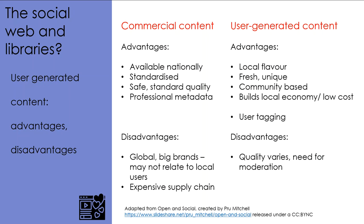In terms of organization and accessibility of this data, user-generated content is often organized with user tagging, which means the person generating the content selects and attaches the keywords they think best describe the content so that other people might find it. User tagging offers local and perhaps more relevant keywords; however, it can also mean that the keywords are quite unique and therefore harder to find. So there are advantages and disadvantages.